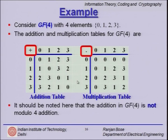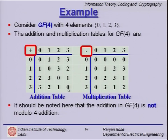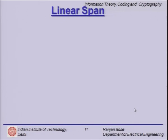It is not trivial to construct GF(4). For example, you cannot simply say GF(4) is modulo-4 arithmetic, because in modulo 4, 3+3 would not give 0. So GF(4) is not simply modulo-4 arithmetic.